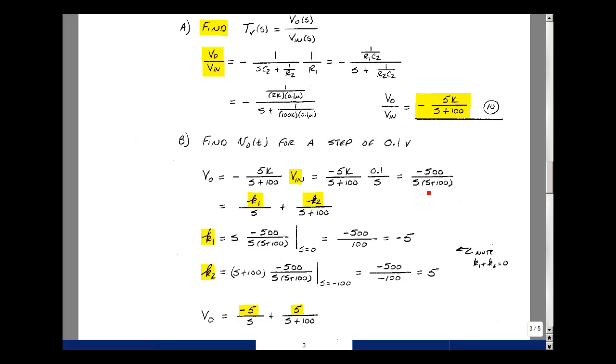As we have a proper rational function, we can write this as some K1 over s plus some K2 over s plus 100. K1 is taking our transfer function and multiplying it by s and letting s equal 0. The s's cancel, and we get minus 500 over 100, and we get minus 5. K2 will multiply the transfer function by s plus 100, and then let s equal minus 100. This cancels with this, and so we get minus 500 over s equal to minus 100, and that's equal to 5.